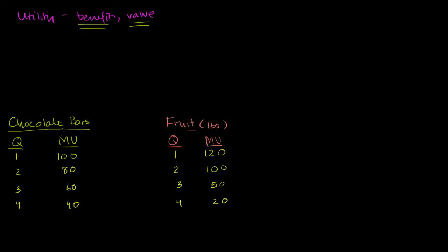And in particular, we're going to focus on marginal utility. So obviously you could have total utility — if I have four chocolate bars, you could say the total utility I'm getting from all four of them. Or you could think about marginal utility: the utility I'm getting from the next incremental chocolate bar or the next incremental pound of fruit.